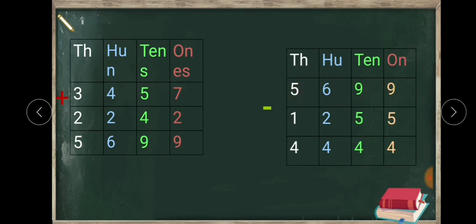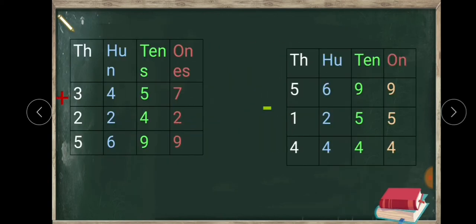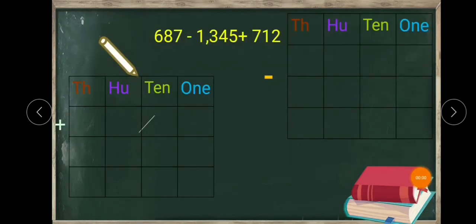From that total we subtract one thousand two hundred and fifty five. Nine minus five is four, nine minus five is four, six minus two is four, five minus one is four. So the final answer is four thousand four hundred and forty four.